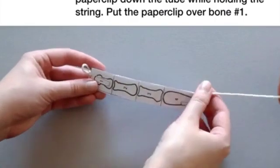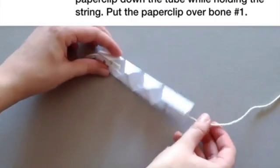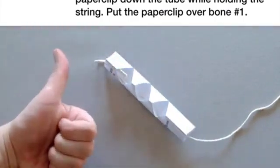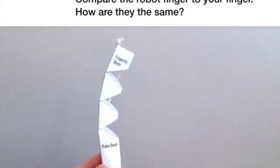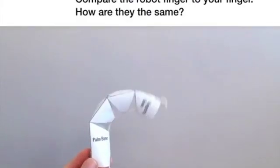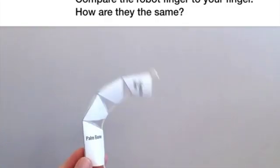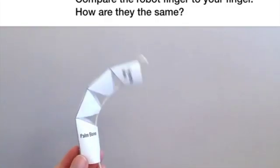Your robot finger will work best if the knot is right at the tip of the finger. Hold the palm end of the tube and pull the string. Compare the robot finger to your finger. How are they the same?